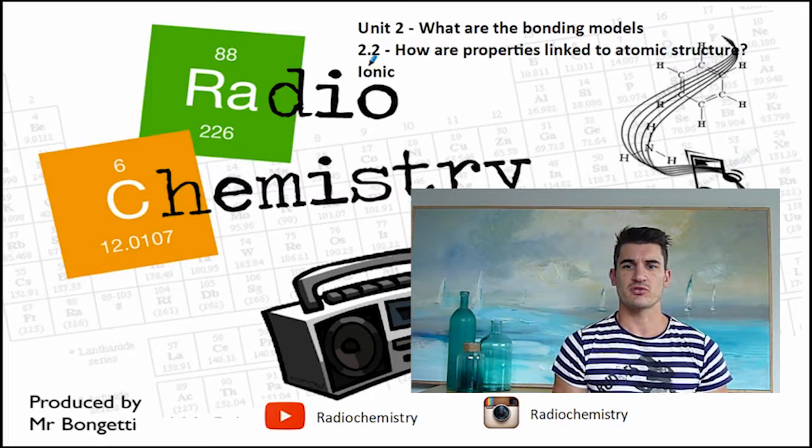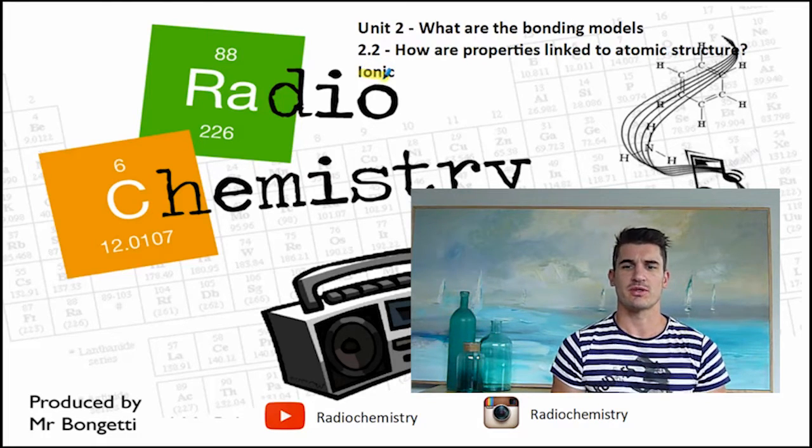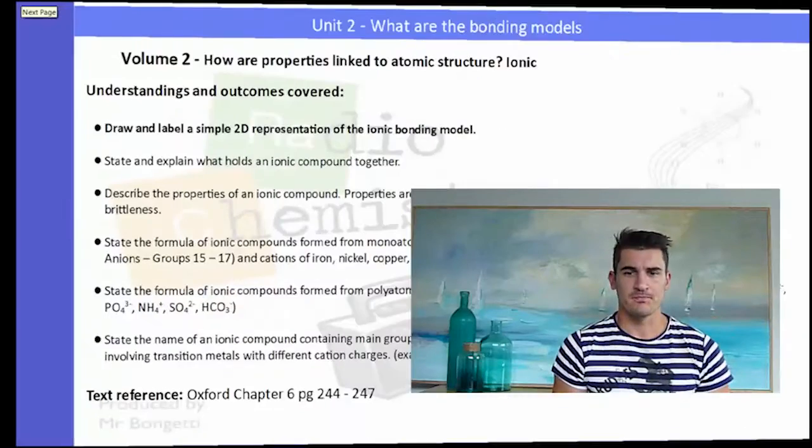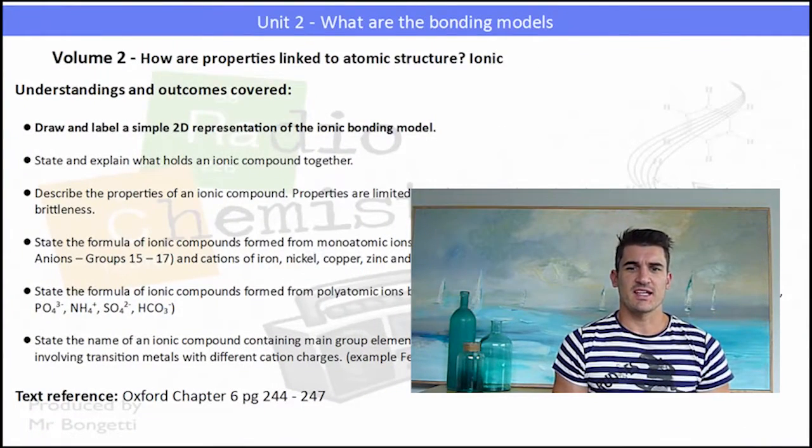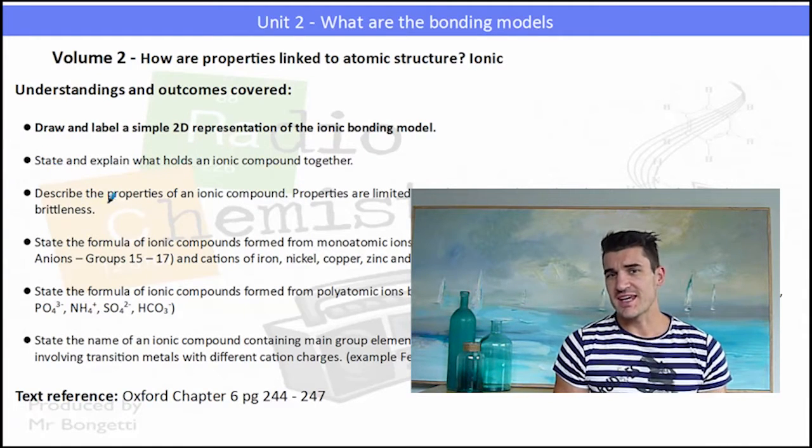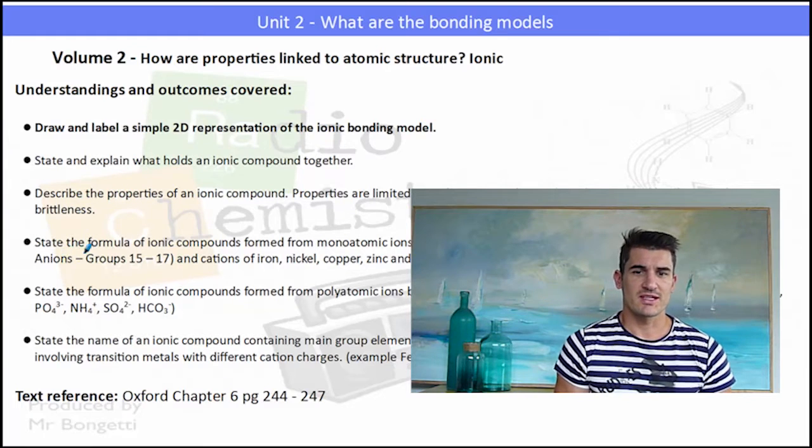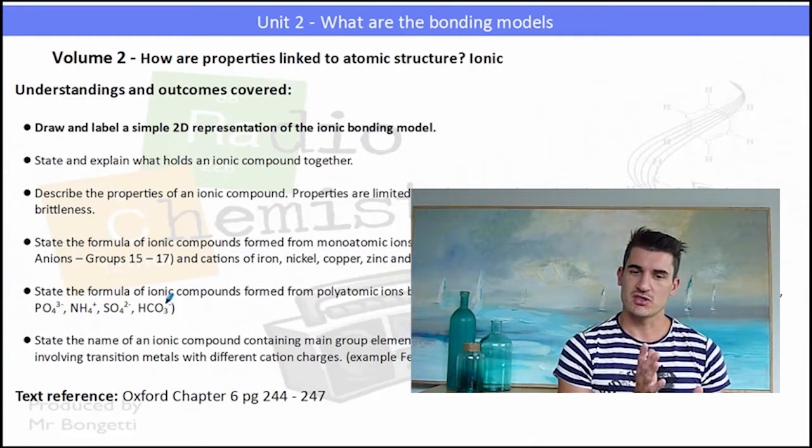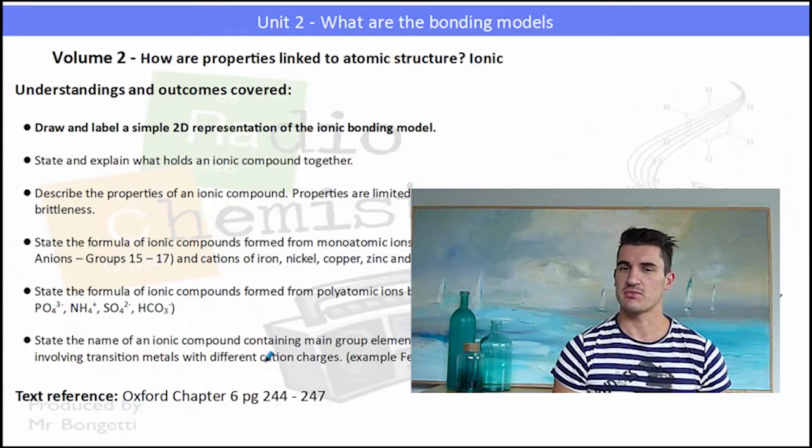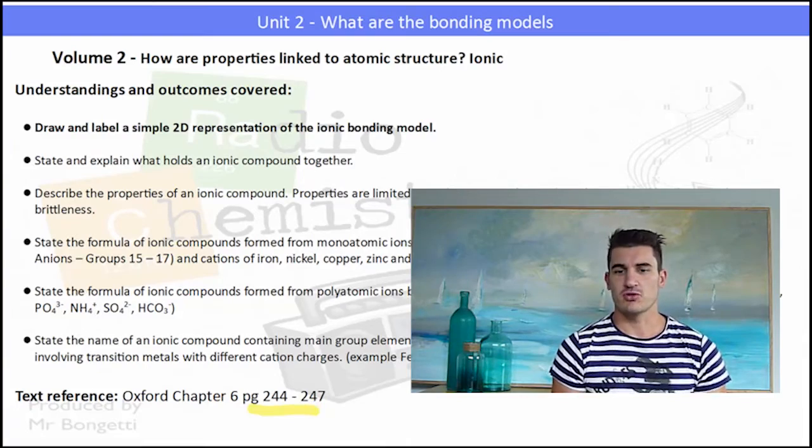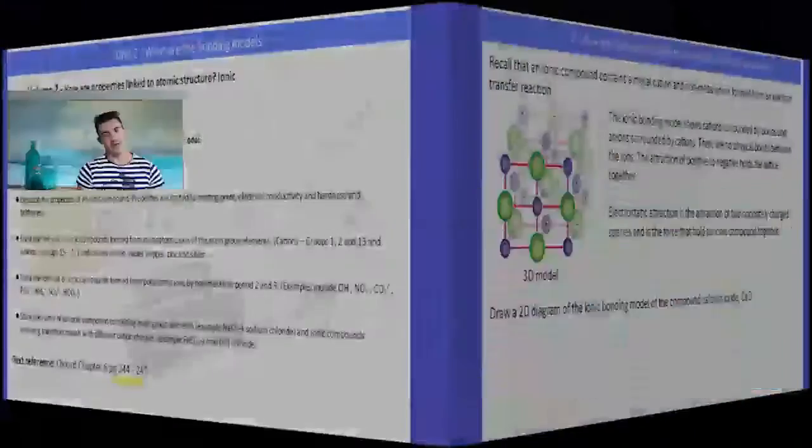Unit 2, what are the bonding models? How are the properties linked to atomic structure? And we look specifically at ionic in this video. The understanding and outcomes, we need to draw and label a 2D representation of an ionic bond. We need to state and explain what holds an ionic bond together. We need to be able to describe some of the properties and then we get into formula writing, which is the most important part of this particular video. The Oxford text, page 244, 247, check it out.